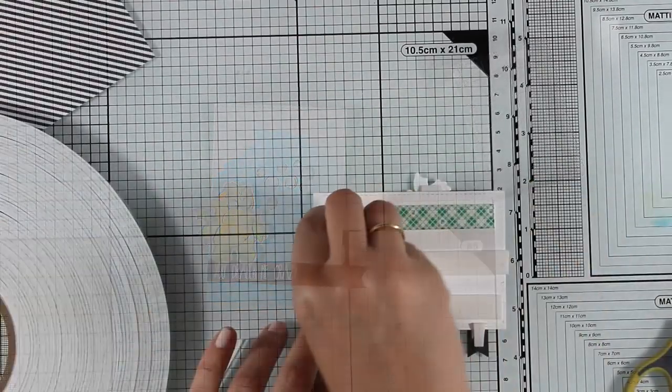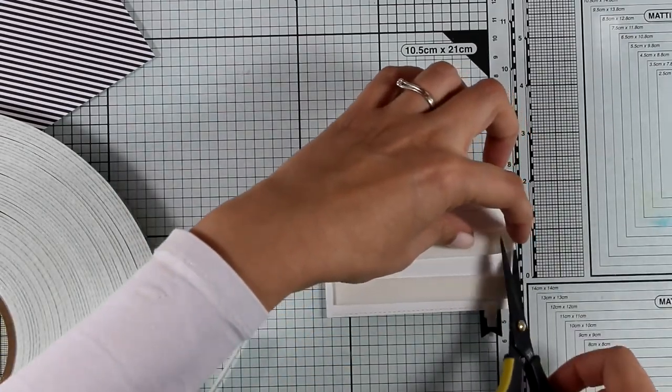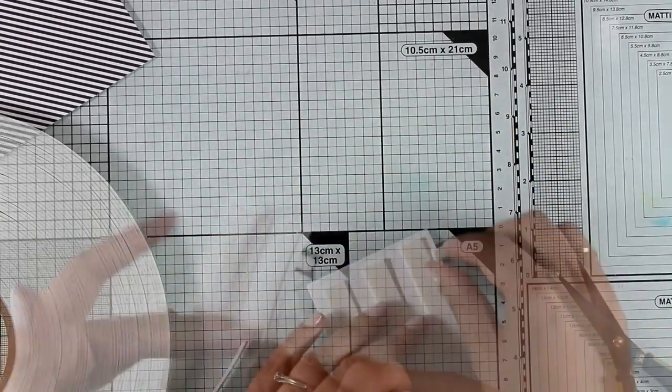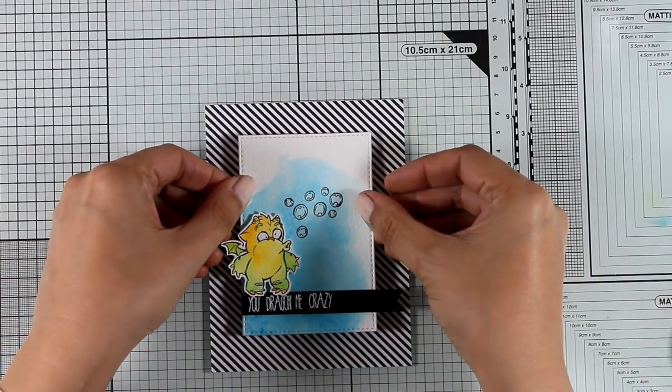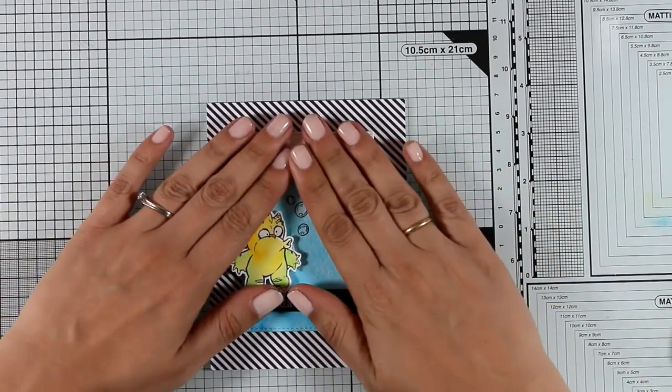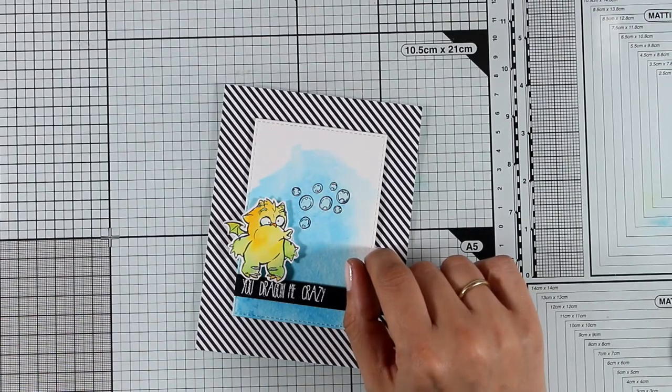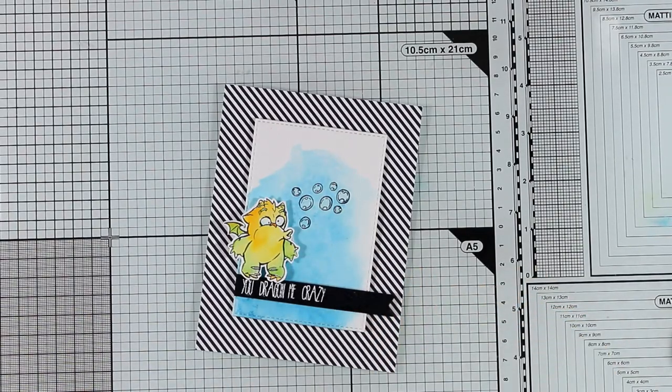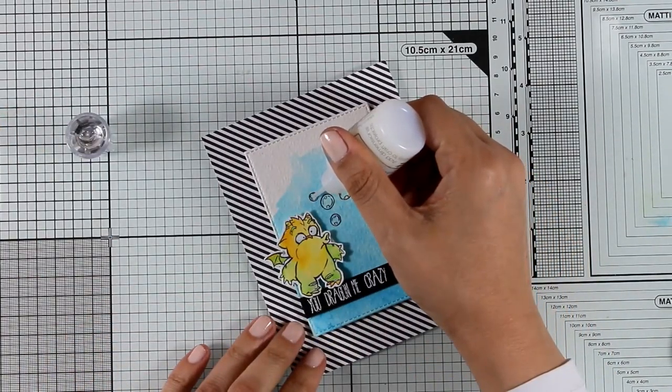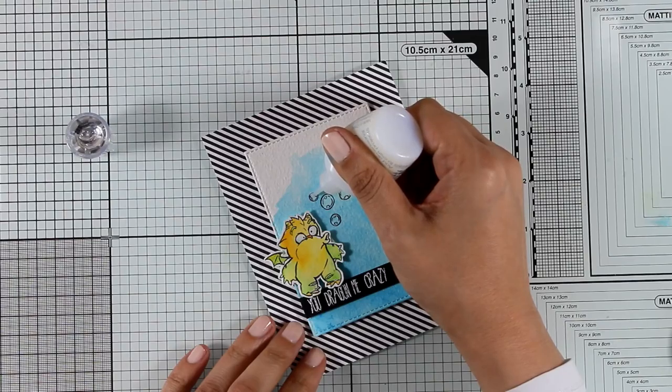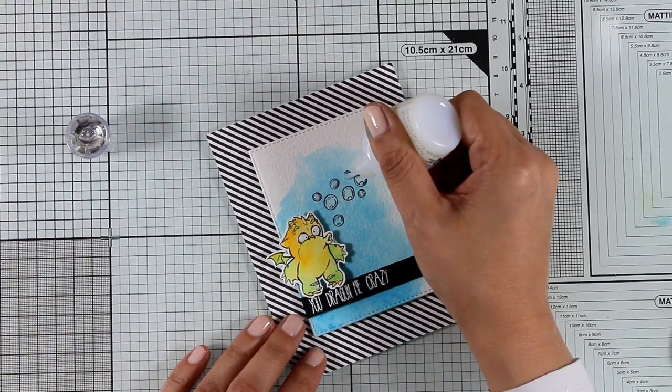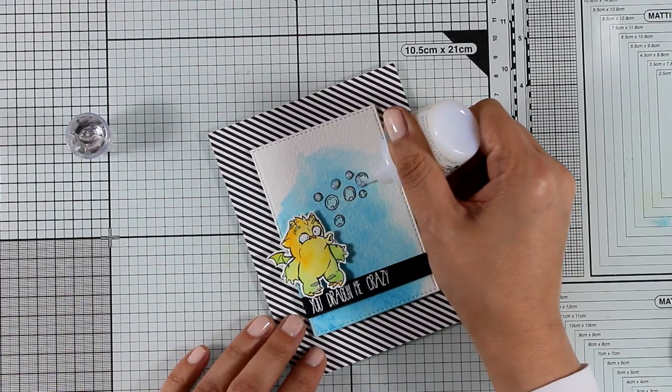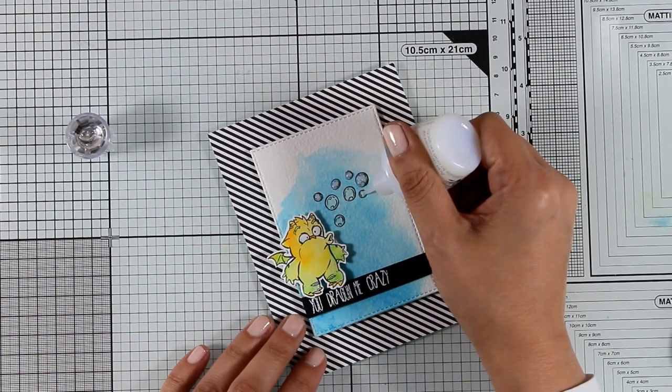Again remember that I'm working on a watercolor paper which makes this technique really easy. Finally I'm going to stick this panel with foam squares at the back on top of a pattern paper and this is black and white stripes pattern paper, I think it's by My Favorite Things, and then I'm going to stick the whole thing on a standard card that's four and a quarter by five and a half. I'm also adding some clear Nuvo drops over those bubbles just to give them some shine and my first card is ready.